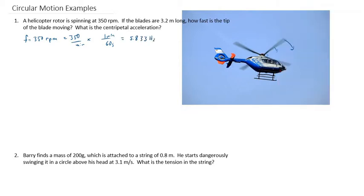So our frequency in seconds should be 5.833 hertz. We're also given that the blades are 3.2 meters long, which we're going to call the radius. And we are wondering the tangential velocity or the centripetal velocity of these blade tips.